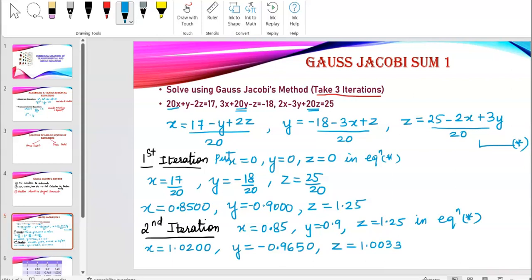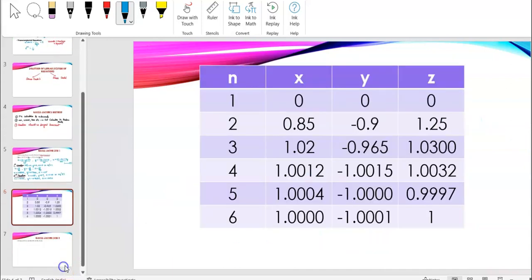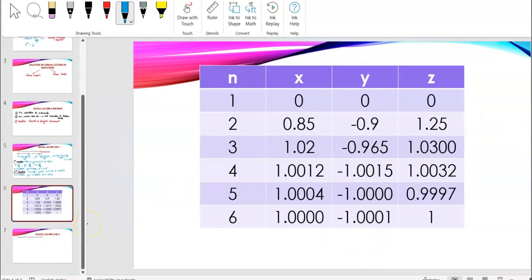So, now for the third iteration, I'll put again these values in equation star. So, when I do that, what is going to happen is, I'll get repeated values. I'll just show you. I think there are some values which I've already calculated. And you'll find, this should not be the first iteration. This is just the initial one. So, this means the 0th iteration, the initial one. This was the first. This was the second.